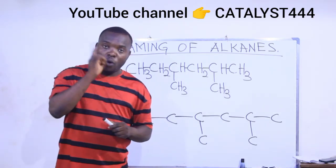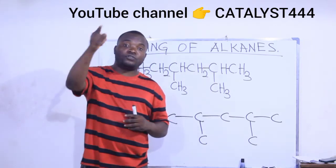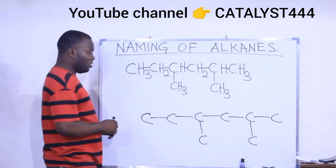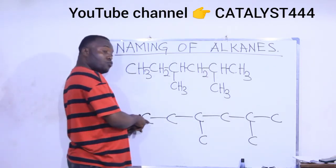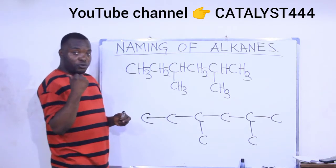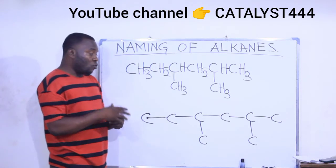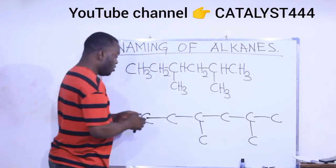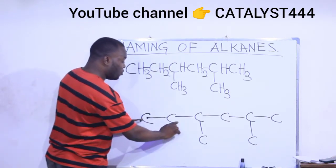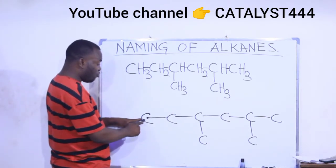Rule number one: identify the longest continuous carbon-to-carbon chain. What is the longest carbon chain in this compound? Remember, from where you are to where you are moving to, there must be a bond between them. I already explained that in the previous video — check it if you haven't watched it. This is the second part.